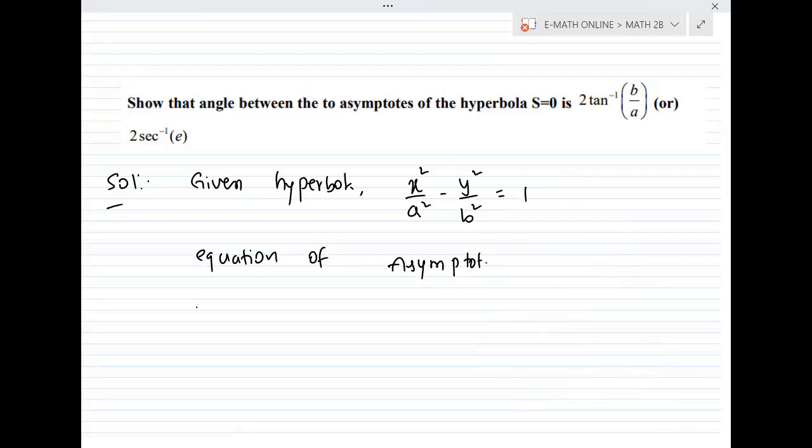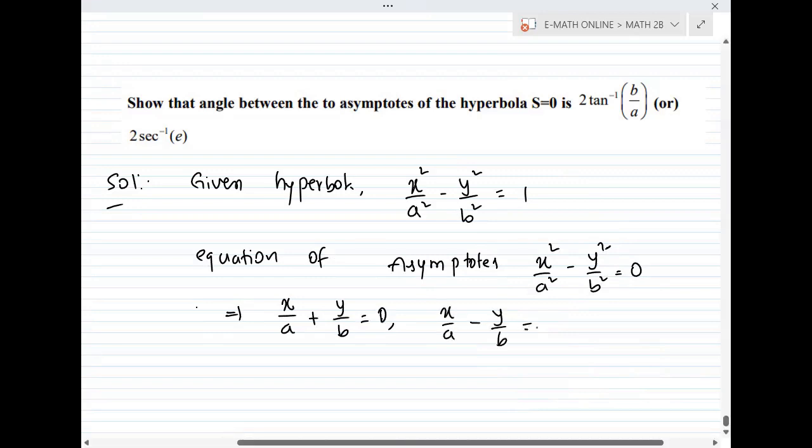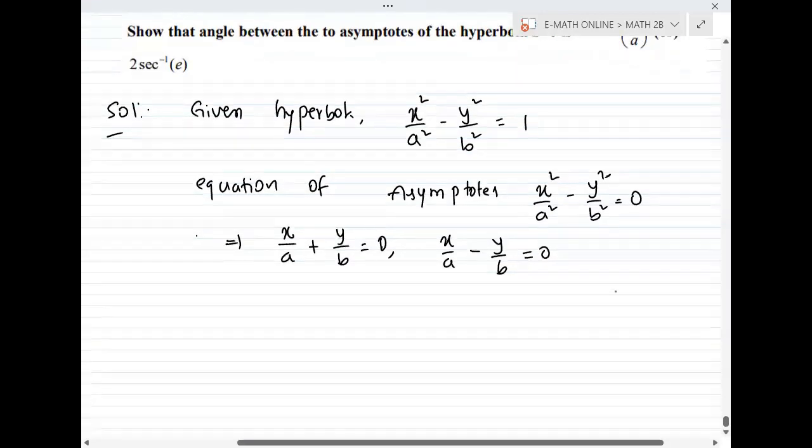Equation of asymptotes: x square by a square minus y square by b square equal to 0. The individual equations are x/a + y/b = 0 and x/a - y/b = 0. These are the asymptotes equations.